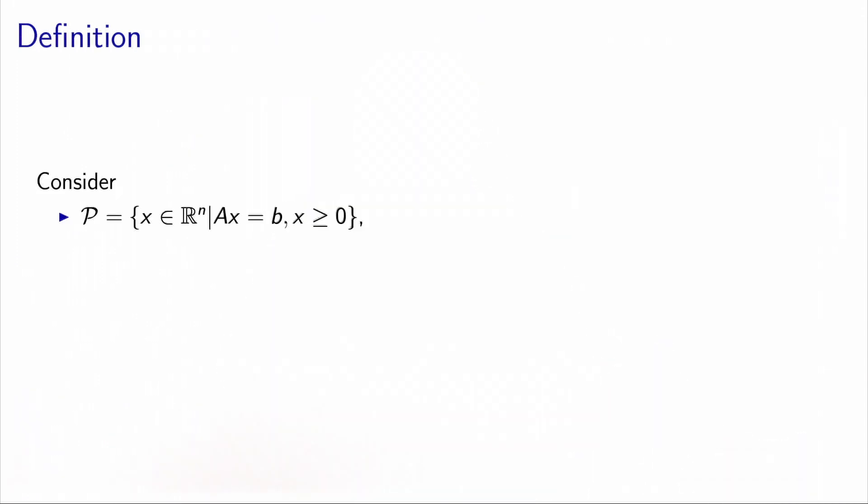The concept of a vertex of a polyhedron is quite important in optimization, but it is a geometric concept. So we continue to investigate the algebraic representation of a vertex. In this video we introduce the definition of a basic solution and a feasible basic solution that will actually correspond to a vertex of the polyhedron. Let's consider the polyhedron written in standard form.